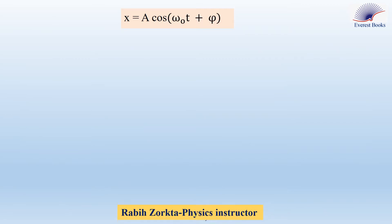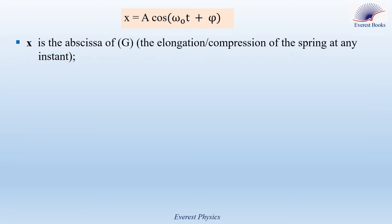We verified that x equals A cosine(omega 0 t + phi) is a solution of the differential equation. Now, what does each term represent? x represents the abscissa, or the elongation or compression of the spring at any instant. Also, x equals delta L, which is the variation in the length of the spring: L final minus L zero.